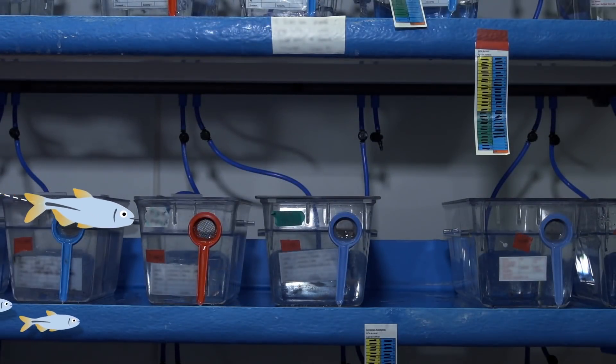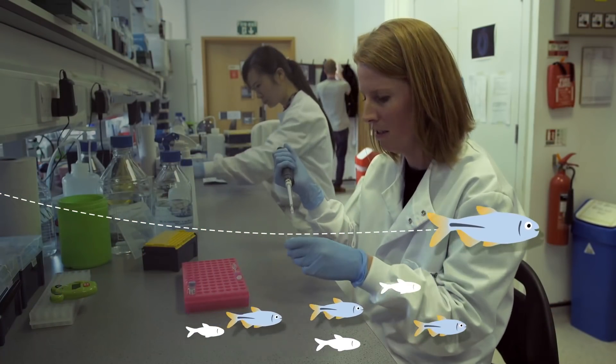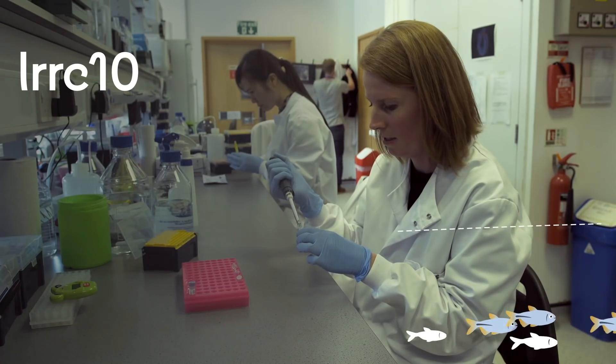Now, they've discovered that the difference between us river fish and our relatives in the caves seems to be a gene called LRRC10.